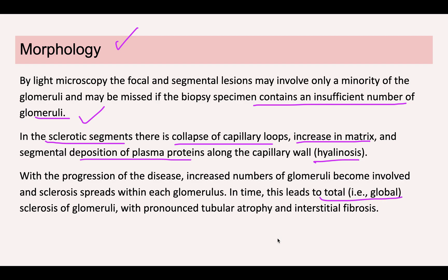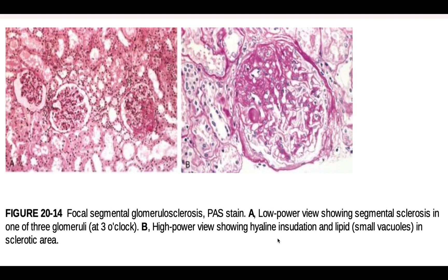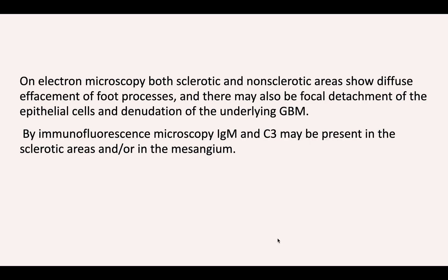On microscopy, some glomeruli appear completely normal while others show affected areas with increased pink staining due to hyalinosis — deposition of material in part of the capillary tuft. To summarize the microscopy findings: some glomeruli are normal, while affected ones show sclerosis, hyalinosis, and increased extracellular matrix production.